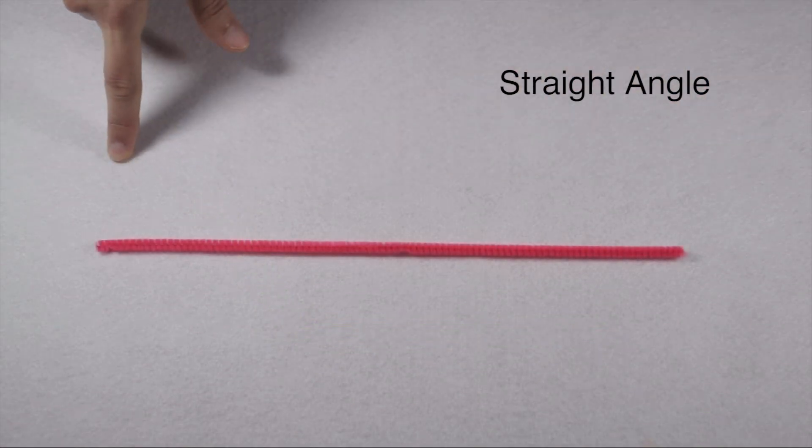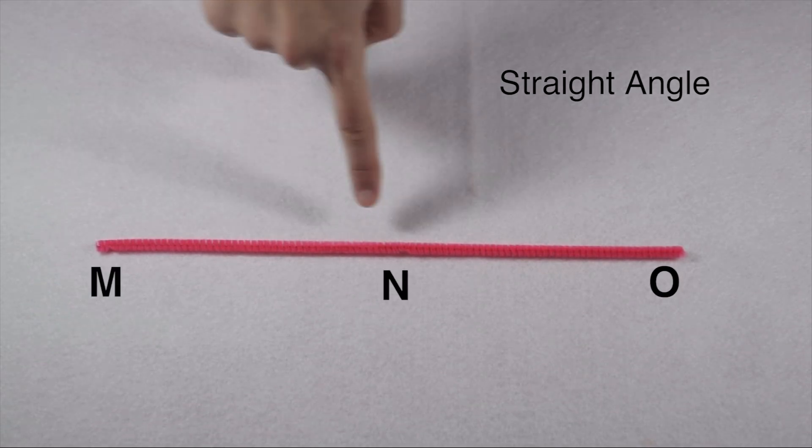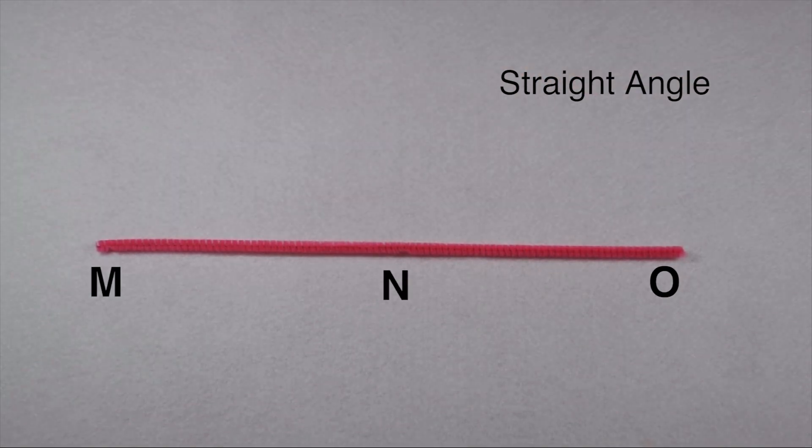When we hit 180 degrees, like we have with angle M, N, O, we have a straight angle. All straight lines are 180 degrees, so they are all considered to be straight angles.